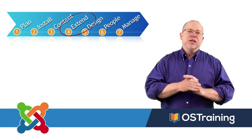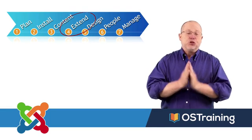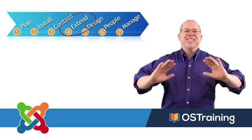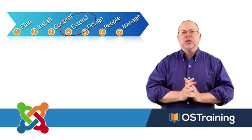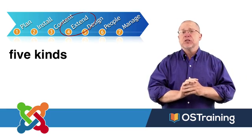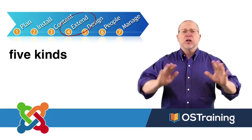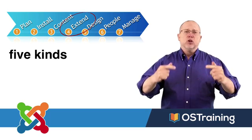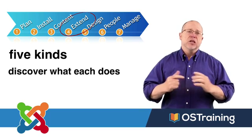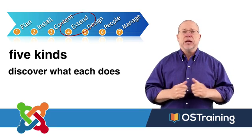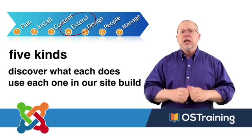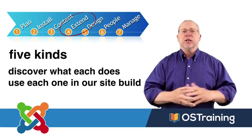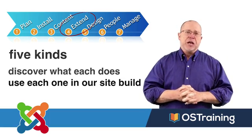Number four is extend. Joomla comes with some fantastic extensions. There are five kinds of extensions and I'll cover each one in depth. We'll look at each of the extensions that comes with Joomla out of the box and we'll build that right into the site that we're going to create.